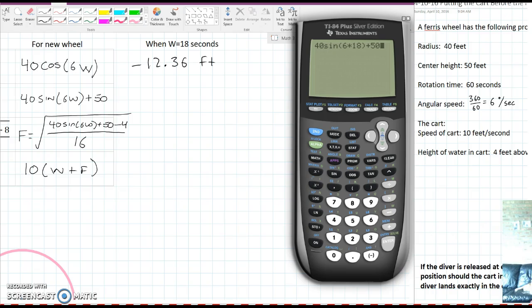Then I'll evaluate 40 sine of 6 times 18 plus 50. That's the second equation. And we'll get 88.04 feet.